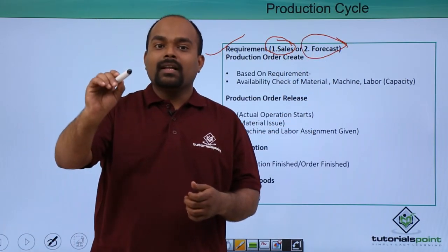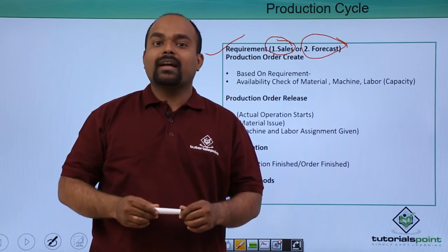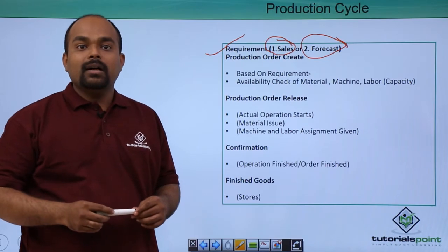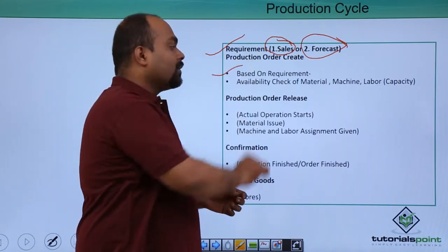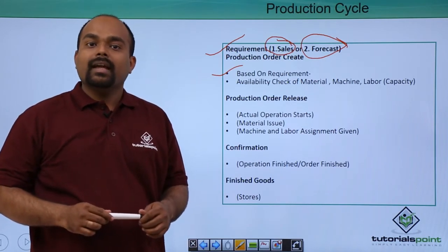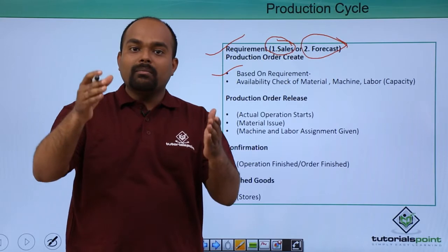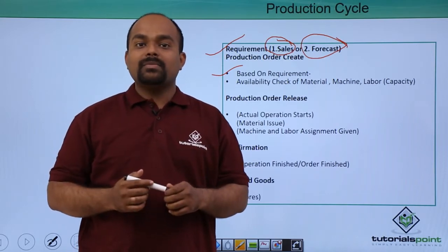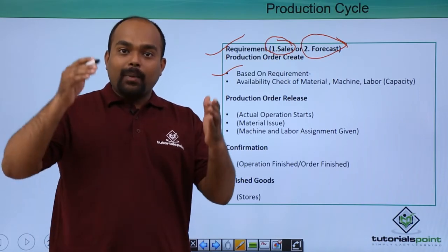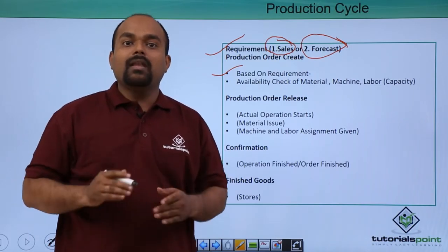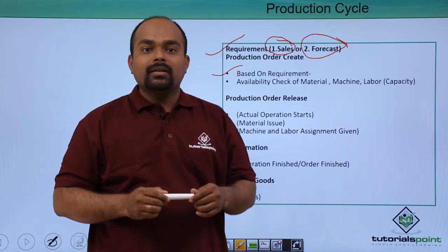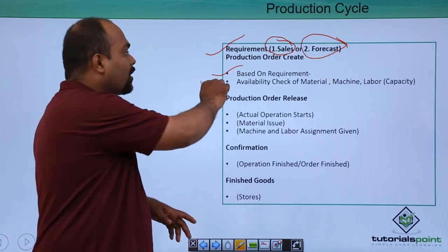According to the requirement, the production order is created. On production order creation, the availability of material is checked, as well as the availability and capacity of machines and labor — all of this is checked under production order create.